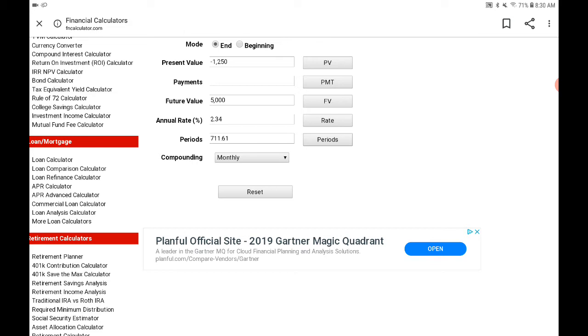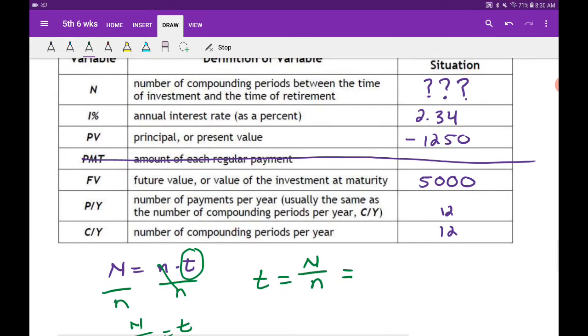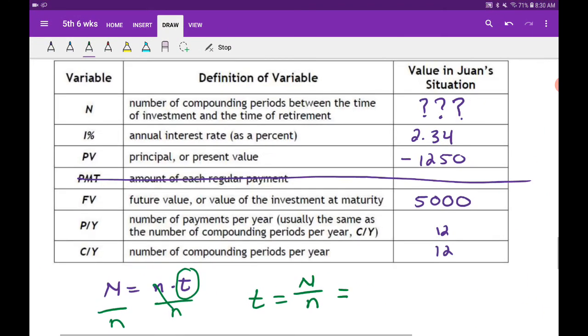So we're looking for the periods, and that's big N. So we got 711.61 periods. So what I'm going to do is take that 711.61 and put it in for big N.